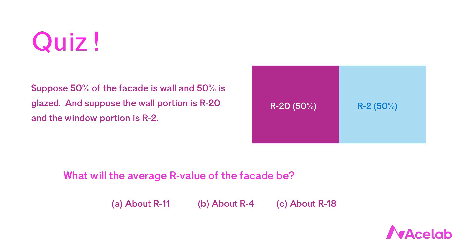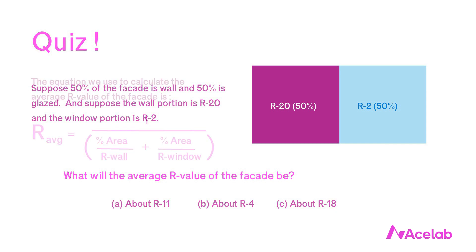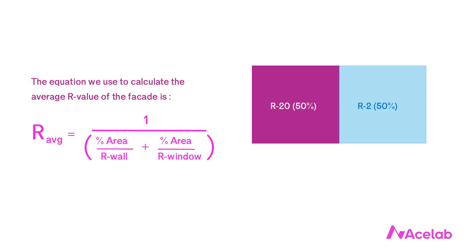We're going to go through this together. The equation we use to calculate the average R value of the facade is not a straight calculation of average, and the reason is outside the scope of this discussion. But if you're interested, Alison Bales has a great article on greenbuildingadvisor.com explaining the reason — you can Google his name, Green Building Advisor, and 'series and parallel flow' to find it. Alison Bales is a terrific explainer of scientific things and it's worth keeping an eye out for anything he writes or presents.